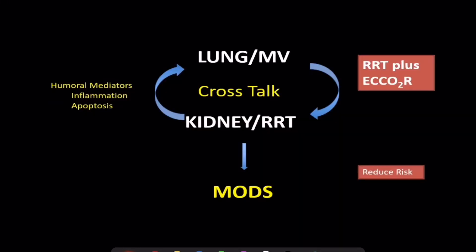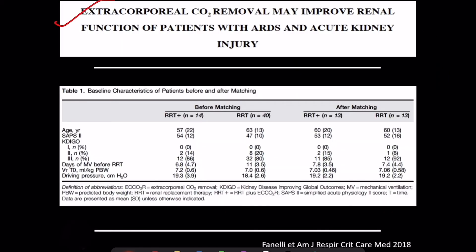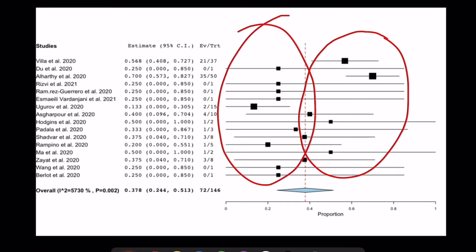There is significant organ crosstalk, especially between the lungs and kidneys, which typically results in multi-organ dysfunction if not treated appropriately. One trial found that using extracorporeal CO2 removal improved kidney parameters as well. However, a meta-analysis of all COVID-19 patients receiving these therapies shows a lot of variation with both positive and negative results, so we are not yet sure about the utility of these devices given the very small study populations.